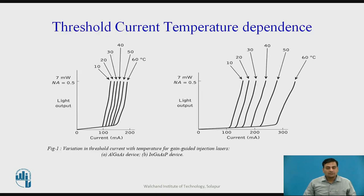Threshold current temperature dependence: Figure 1 shows the variation in threshold current with temperature for two gain-guided oxide-insulated strip injection lasers. Both devices had strip widths of approximately 20 micrometers but were fabricated from different material systems for emission at wavelengths of 0.85 micrometers and 1.55 micrometers.